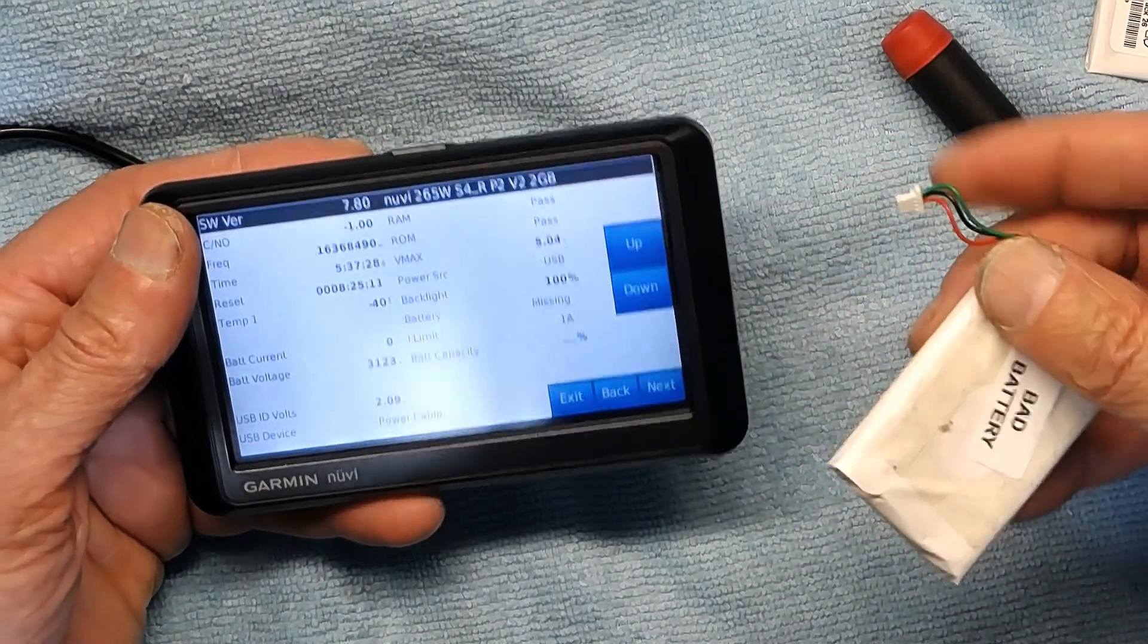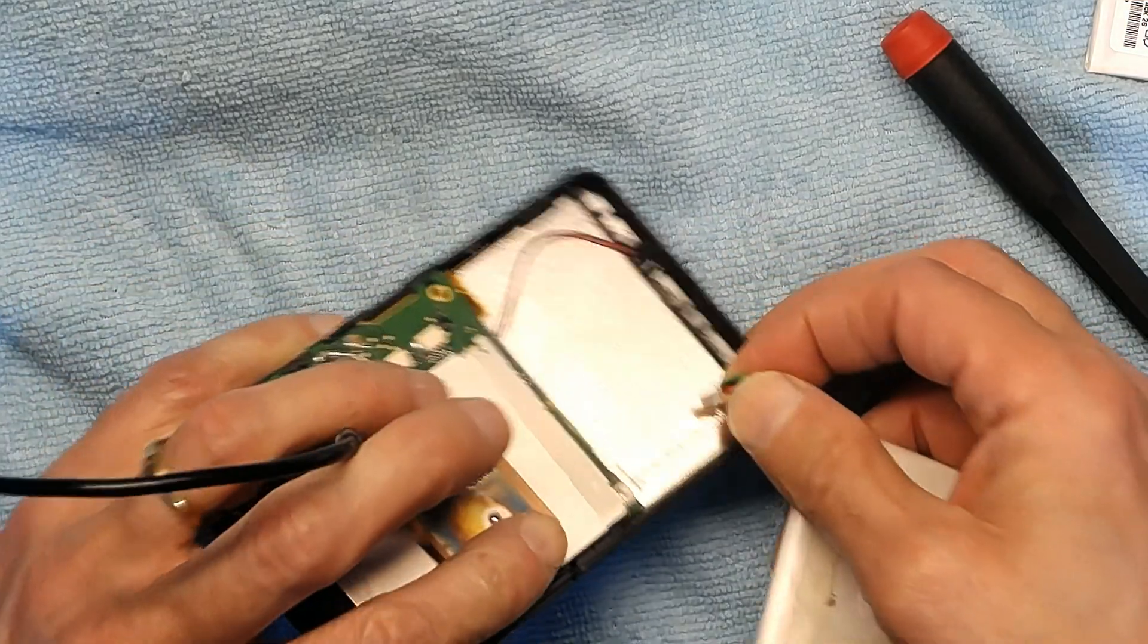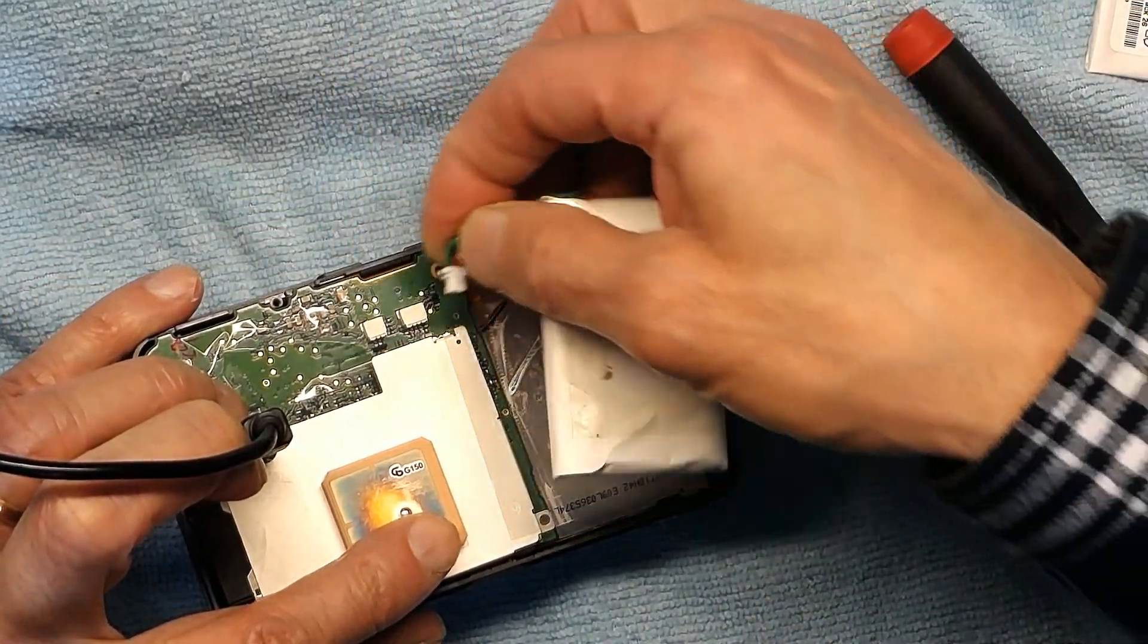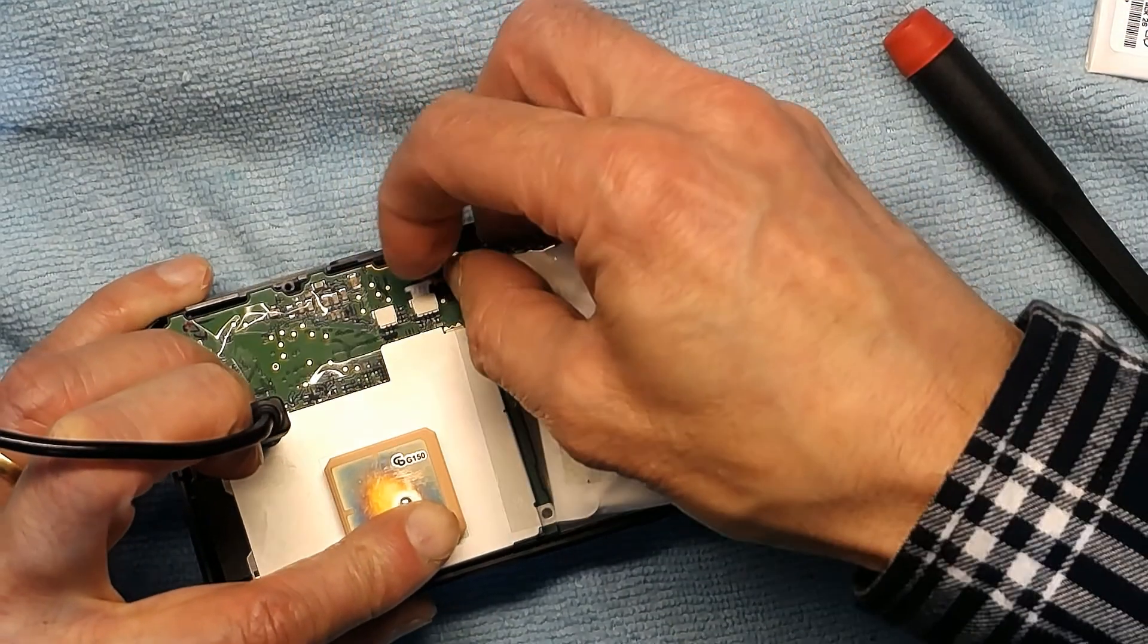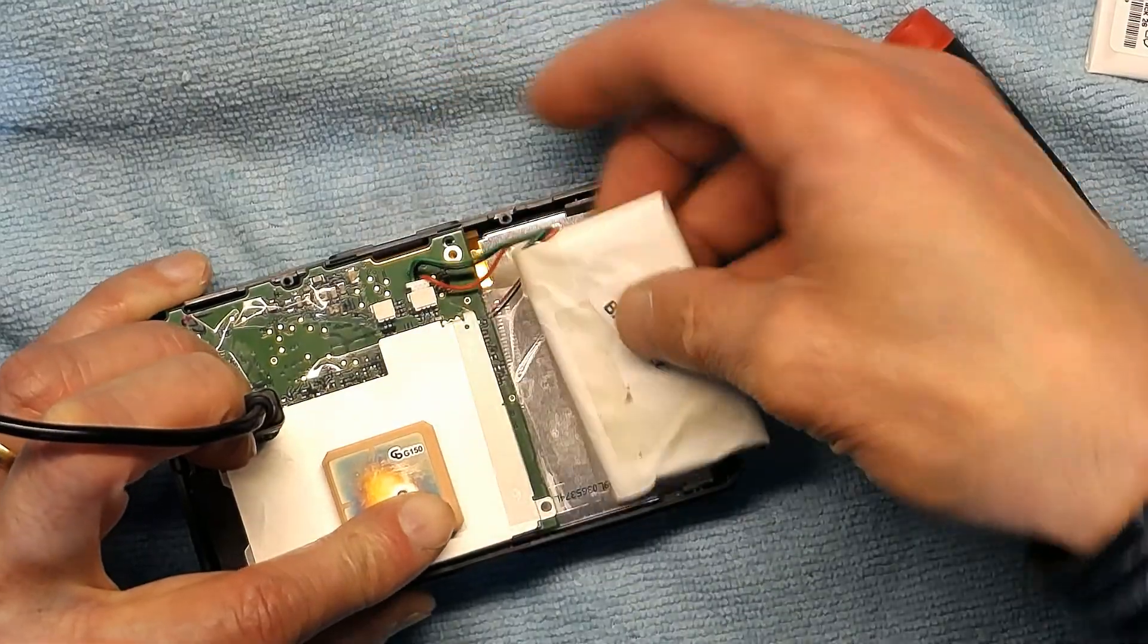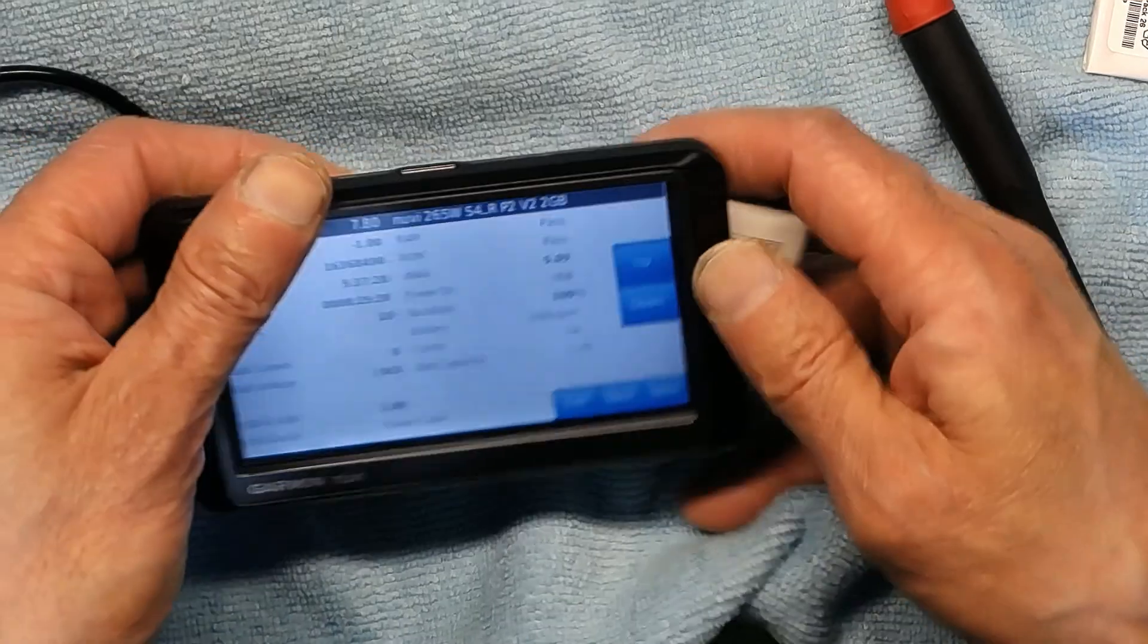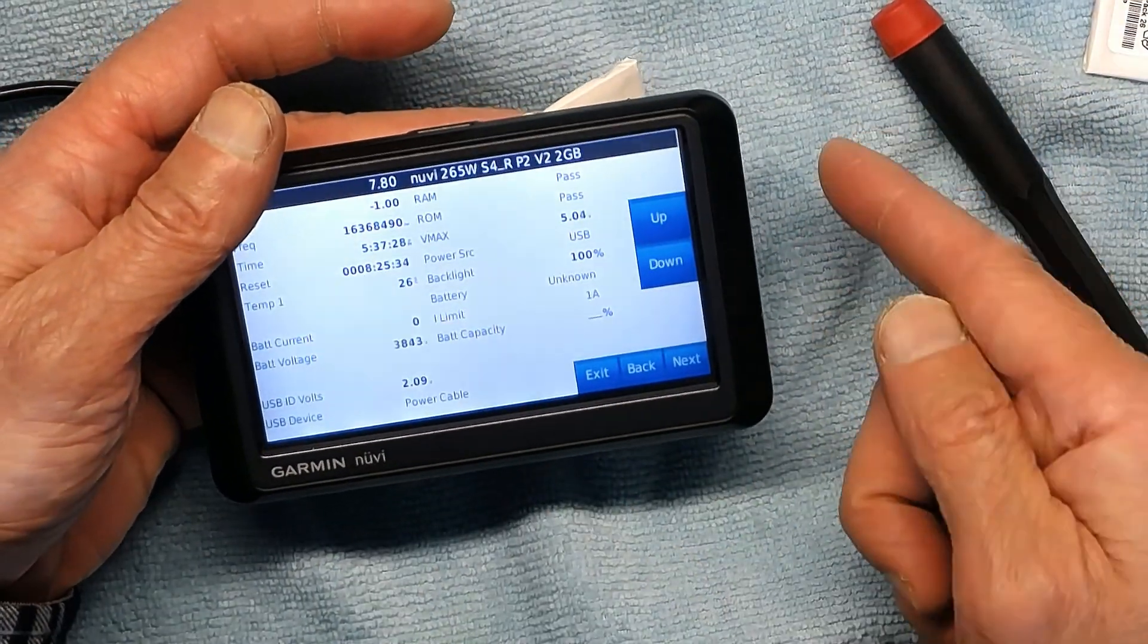This is a bad battery. I'm going to put a defective battery. Watch what happens. Okay, the battery is all the way in. It's a Garmin original defective battery. The charging current is still zero because that battery is bad.